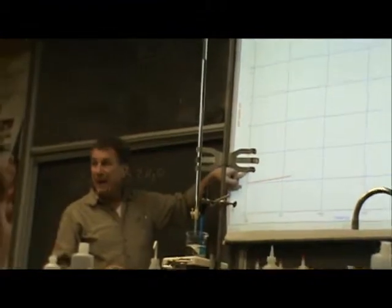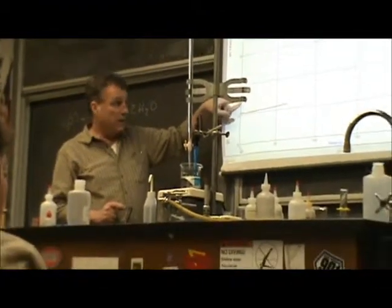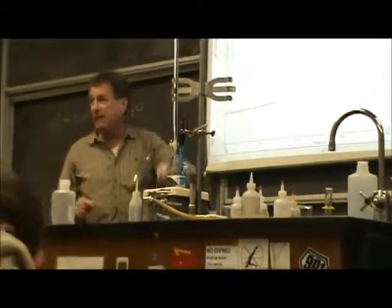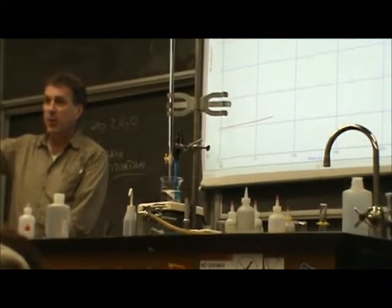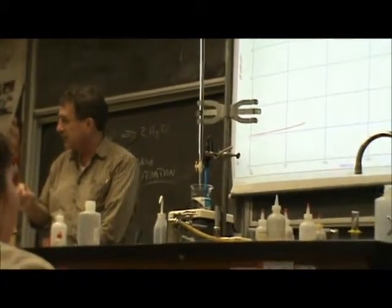Because here I'm changing the concentration from about a hundredth of a mole per liter to about a thousandth of a mole per liter of hydronium ions. Whereas between six and seven, I'm changing it from a millionth to a ten millionth of a mole per liter, and it doesn't take as much hydroxide to do that.